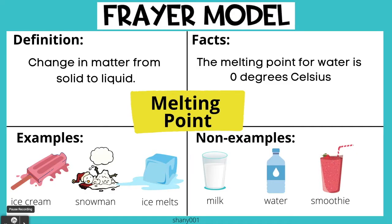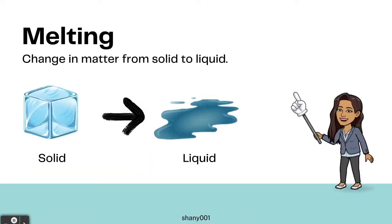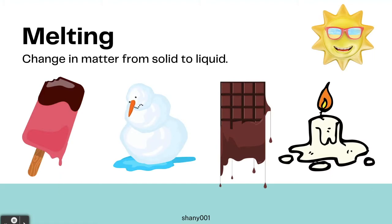Melting point. Definition: change in matter from solid to liquid. The melting point for water is zero degrees Celsius. Examples: melting ice cream, a melting snowman, or melting ice. Non-examples: milk, water, smoothie.